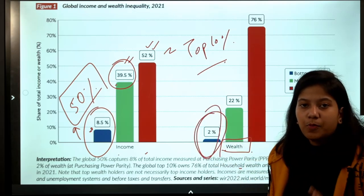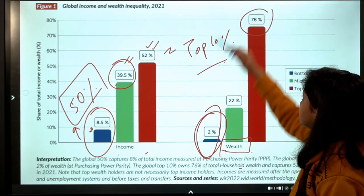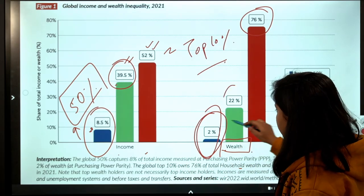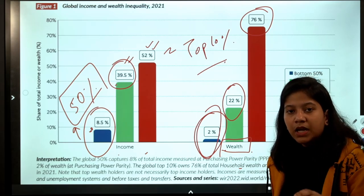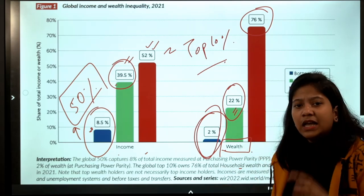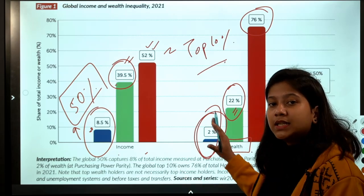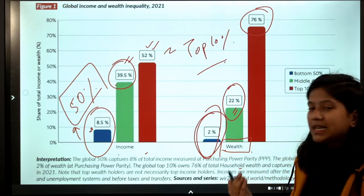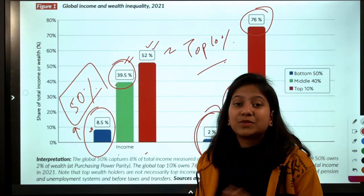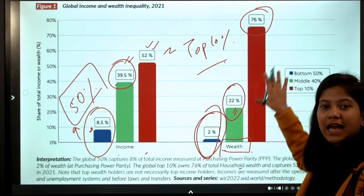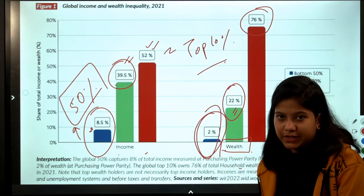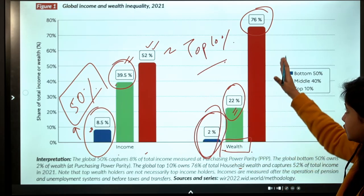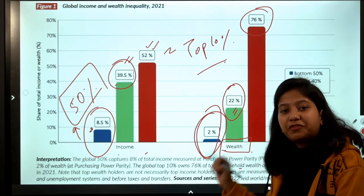Only 2 percent of global wealth is held by the bottom 50 percent of the global population. The top 10 percent hold 76 percent of global wealth, and the middle 40 percent of the global population hold 22 percent of wealth. The focus should be on the richest and the poorest — on the inequality in relation to the highest earners versus the bottom 50 percent of the global population.